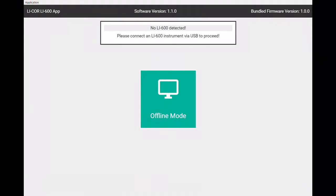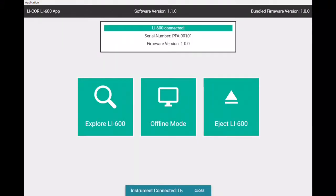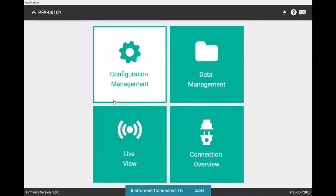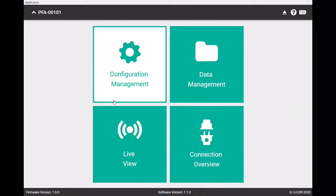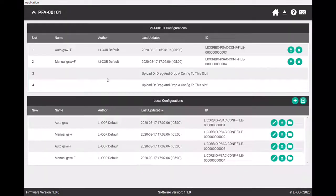Okay, so we'll start by turning our instrument on. Then we will go to the Explore LI 600, then we'll select the configuration management.